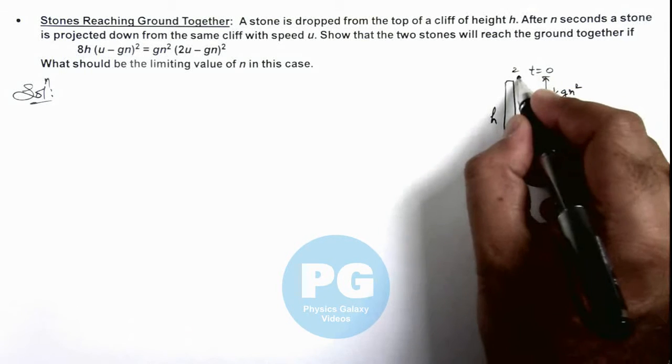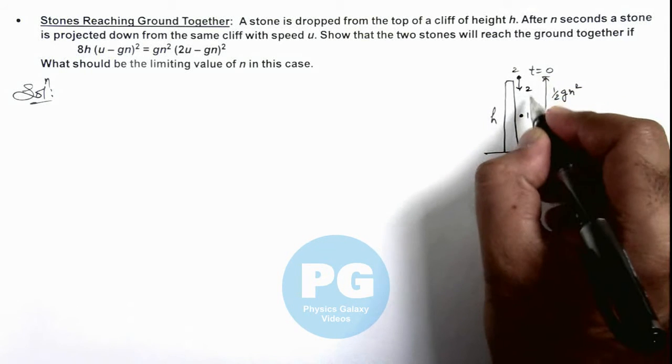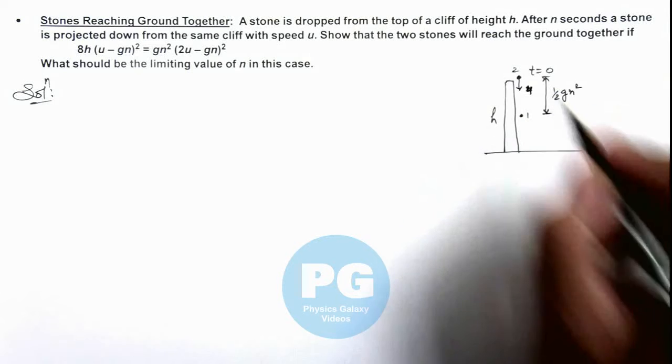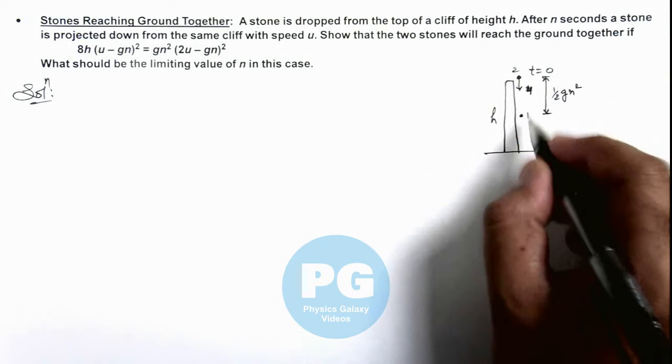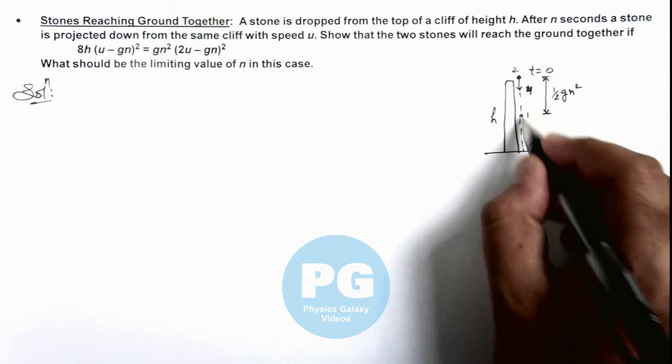Now stone 2 is thrown with a speed u in downward direction. We are required to consider the two stones will reach the bottom of this cliff together.